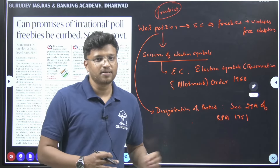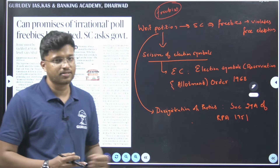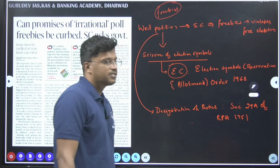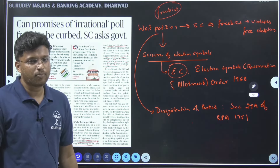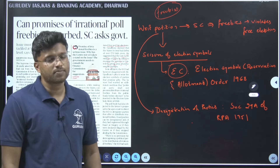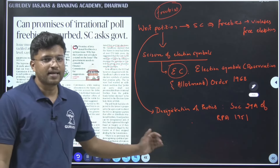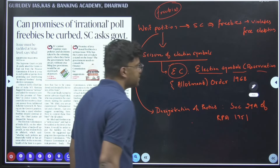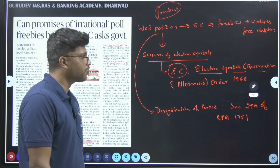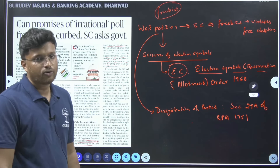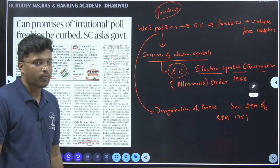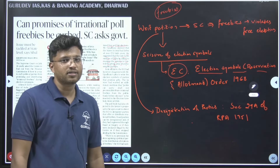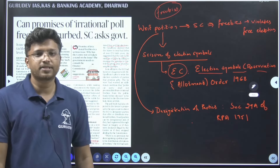When we look at election symbols, it is the Election Commission which is responsible for allocating election symbols as well as party symbols in the country. These election symbols are provided under the Election Symbols (Reservation and Allotment) Order of 1968.